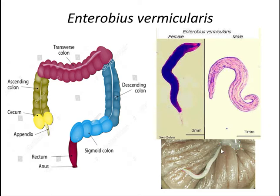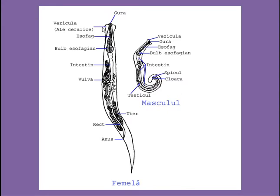Enterobius vermicularis is a small-sized, white-colored worm with a fusiform, thread-like body having pointed ends. As an intestinal parasite it has a protective covering called the cuticle, which is fine and striated. The mouth is surrounded by cervical alae, which are three wing-like cuticular expansions present in both males and females. They lack a true buccal cavity.